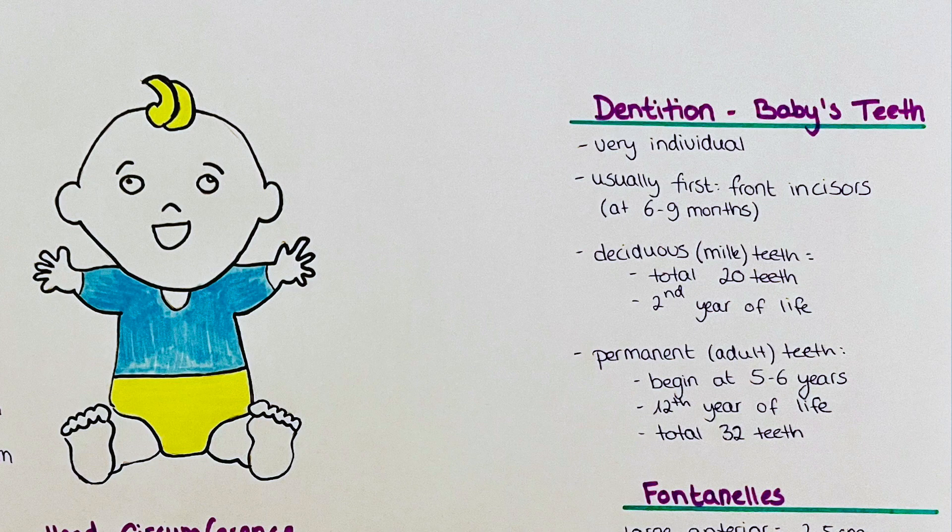The permanent or adult teeth begin to erupt at around age 5 to 6 years, and usually the molars are the first adult teeth to appear. At the same time as the new teeth appear, the milk teeth will fall out in the same order.